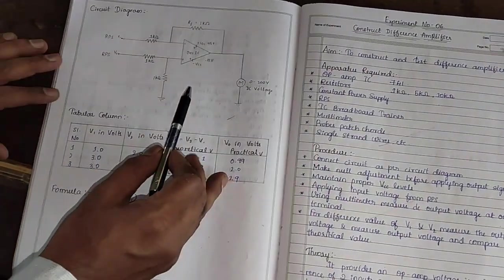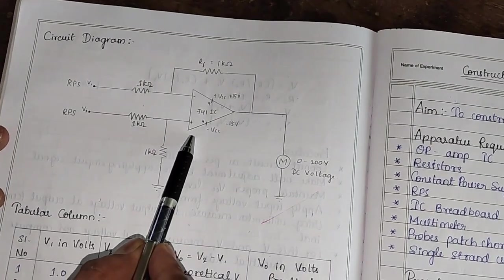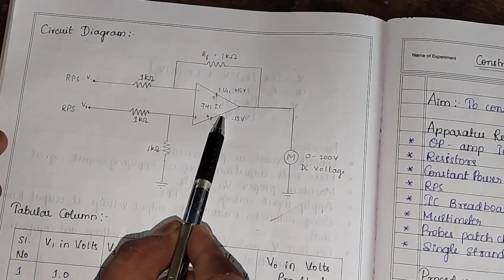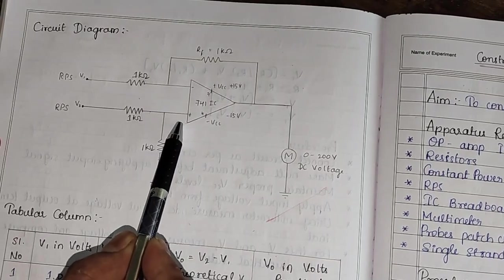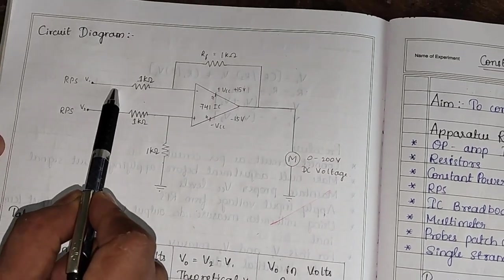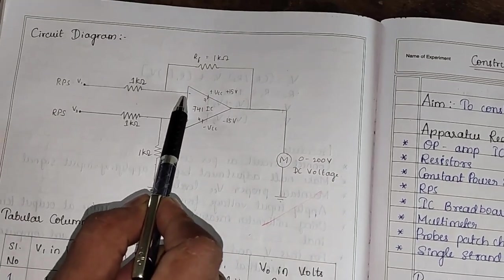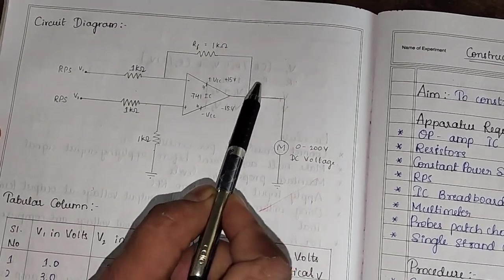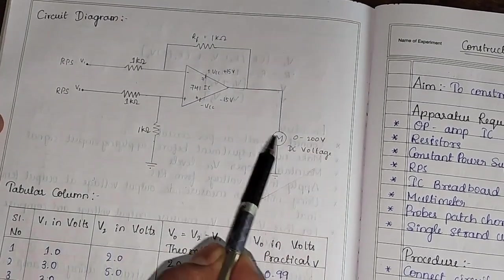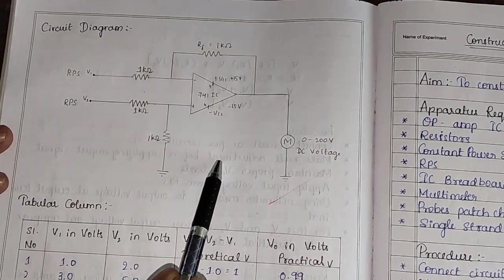In this circuit, it consists of an op-amp IC that is 741 and two resistors are connected at pin number 3 and one resistor is connected at pin number 2 and one feedback resistor is connected between pin number 2 and pin number 6. This is the circuit of difference amplifier using op-amp.